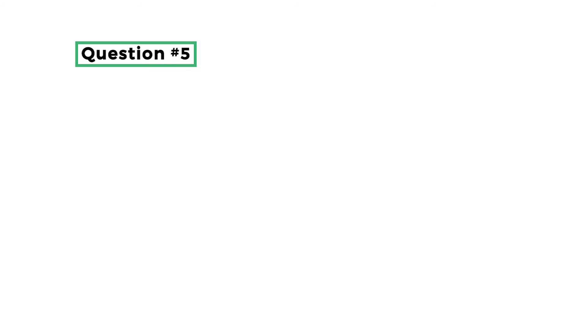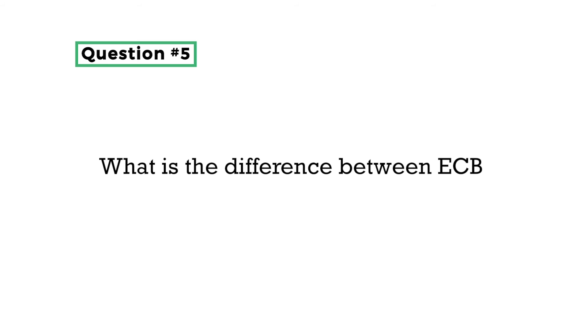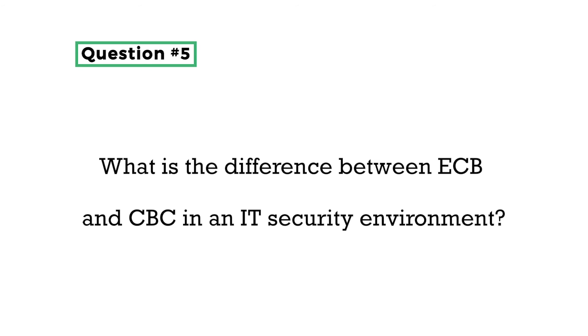Question five: what is the difference between ECB and CBC in an IT security environment? ECB, or Electronic Code Book, is basically raw cipher — you have a block that needs to be encrypted as output; if not encrypted it may show up as ciphertext. CBC, or Cipher Block Chaining, uses an initialization vector and converts plaintext to ciphertext. These modes of operational configuration allow ciphers to work with large data streams without compromising security.